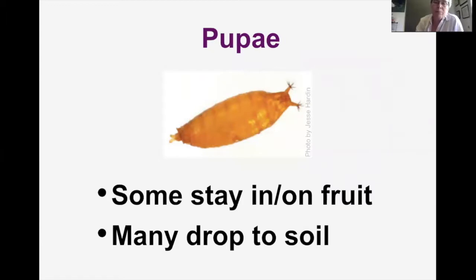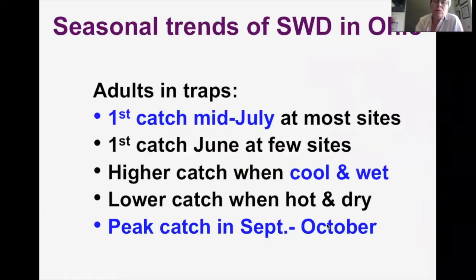Here's a close-up of the pupae, which are about the size of a grain of rice. Some stay in or on the fruit, but many drop to the soil. In terms of seasonal trends, we usually get first activity of adults — which we determine by when we're catching them in traps — not until about mid-July. Occasionally we find a few in June at some sites. We know you get higher catch when it's cool and wet; they don't like it hot and dry, and usually the peak catch is very late in the year, in September and October.